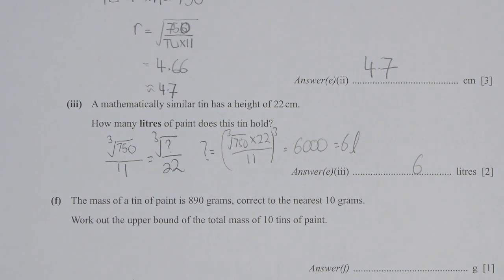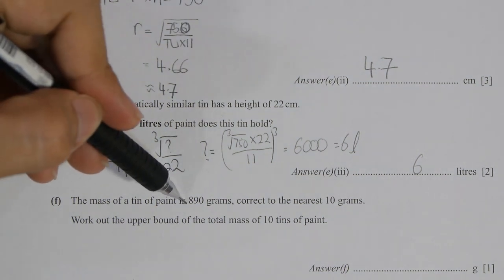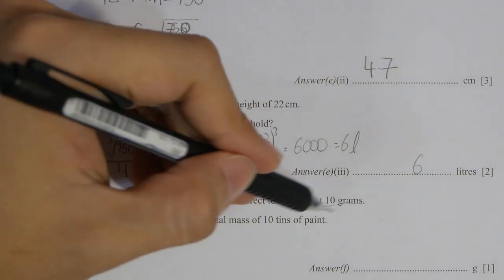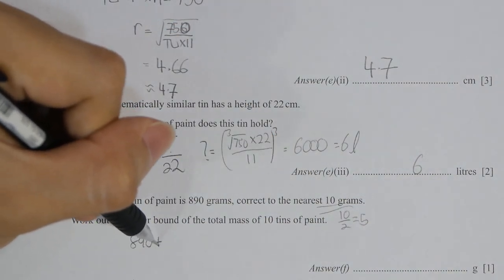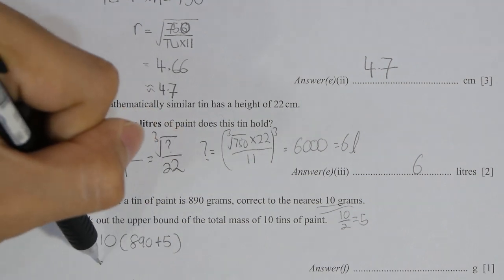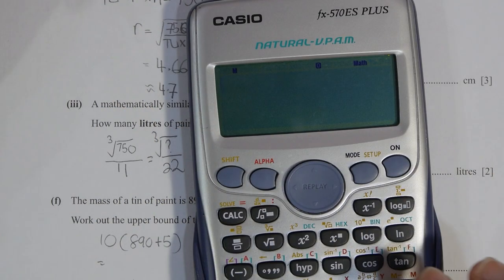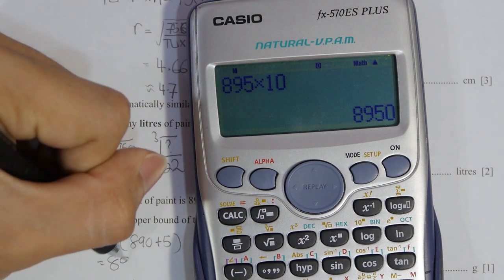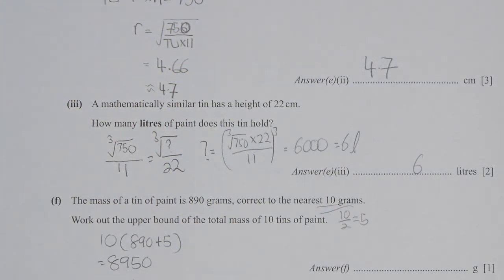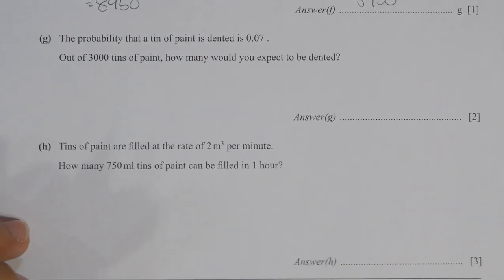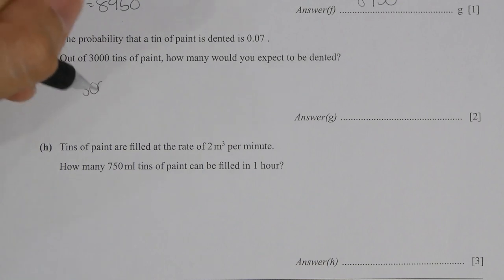The mass of a tin is 890 grams corrected to the nearest 10 grams, so the rounding value will be 10 divided by 2 equals 5. To find the upper bound of 890 grams per tin, you're required to add 5 then multiply the value by 10. The final result will actually be 8,950 grams.